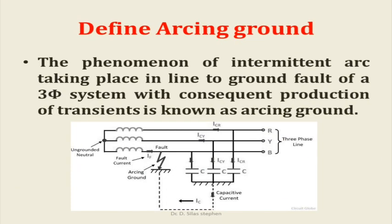Define Arcing Ground. The phenomenon of intermittent arc taking place in a line-to-ground fault of a three-phase system with constant production of transients is known as arcing ground.